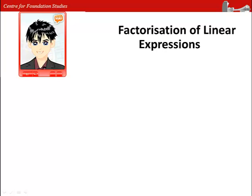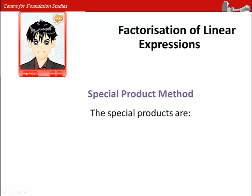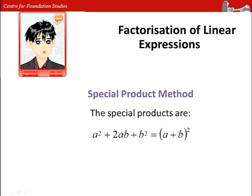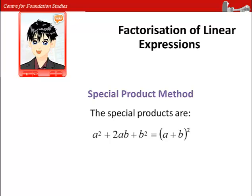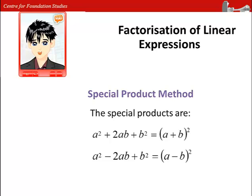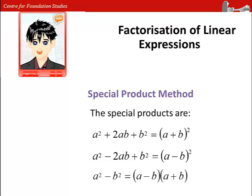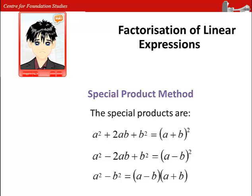The special product method consists of three special products: a² + 2ab + b² = (a + b)², a² - 2ab + b² = (a - b)², and a² - b² = (a - b)(a + b).